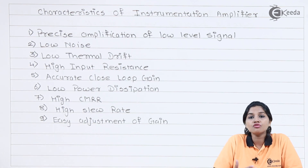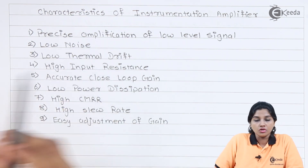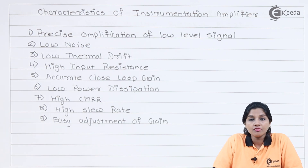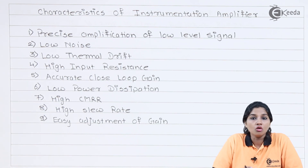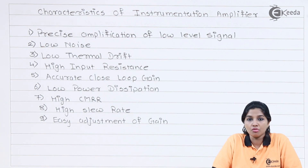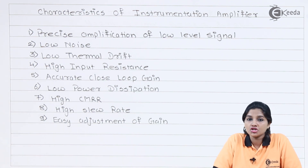The second requirement is low noise. The instrumentation amplifier is a difference amplifier, and a difference amplifier has the capability of rejecting noise present at its input. The low noise requirement of the instrumentation amplifier is very important when it is used in biomedical applications, because in biomedical applications the signal comes from the patient's body and the output is required to be very accurate and stable. Because of this, the noise present at the input of the instrumentation amplifier is required to be as low as possible.